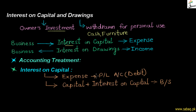How is interest on capital treated in accounting? Since it is a business expense, it is written on the debit side of the profit and loss account. Interest on capital is recorded on the debit side of the profit and loss account, which represents expenses.